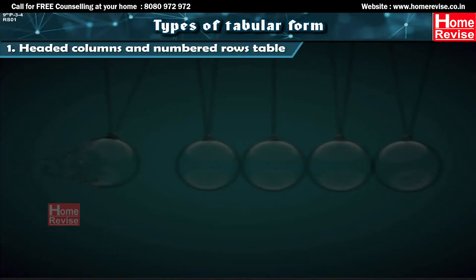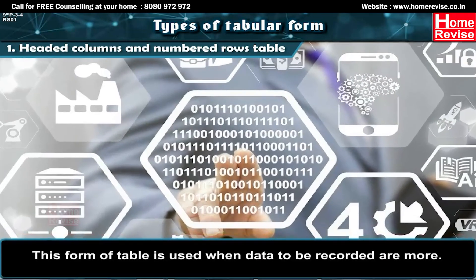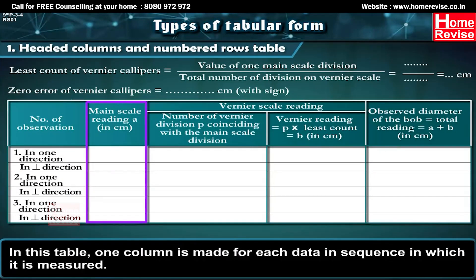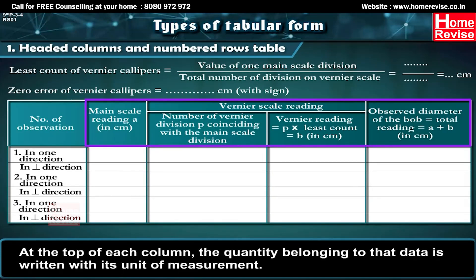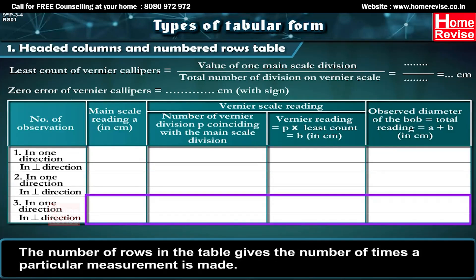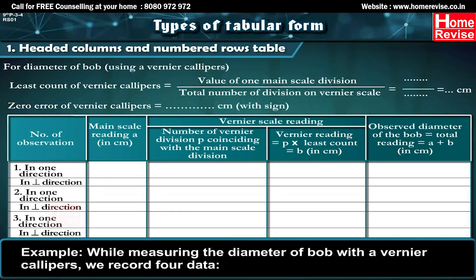Headed columns and numbered rows table: This form of table is used when the data to be recorded are more in number. One column is made for each data item in the sequence in which it is measured. At the top of each column, the quantity belonging to that data is written with its unit of measurement. The number of rows in the table gives the number of times a particular measurement is made.